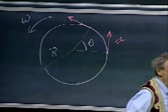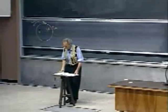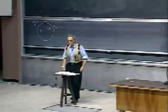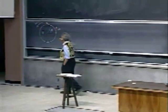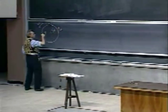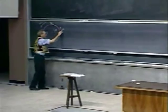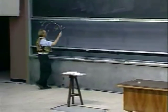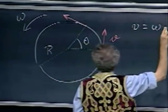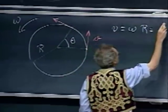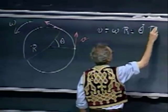We may now do something we haven't done before: we could give this object in this circle an acceleration, so we don't have to keep the speed constant. Now, v equals omega r, so that equals theta-dot times r.